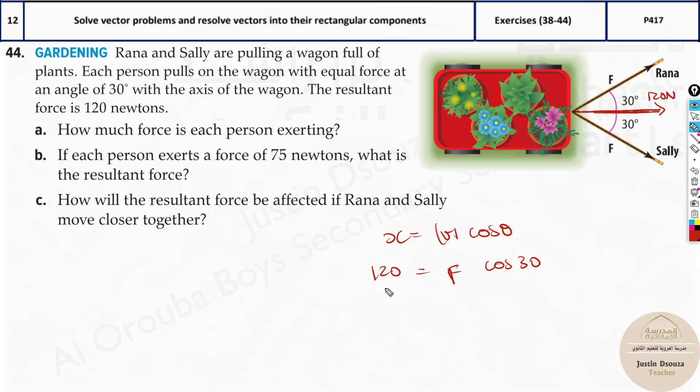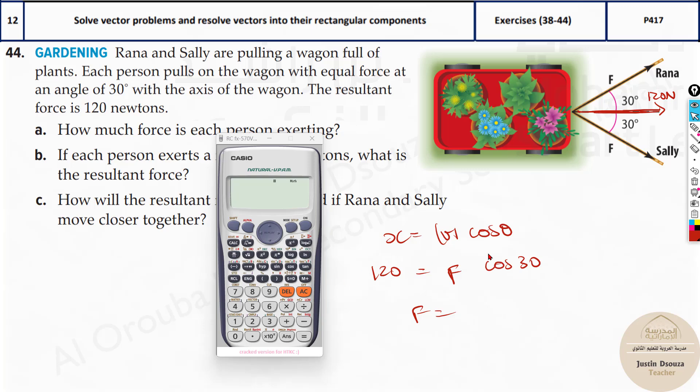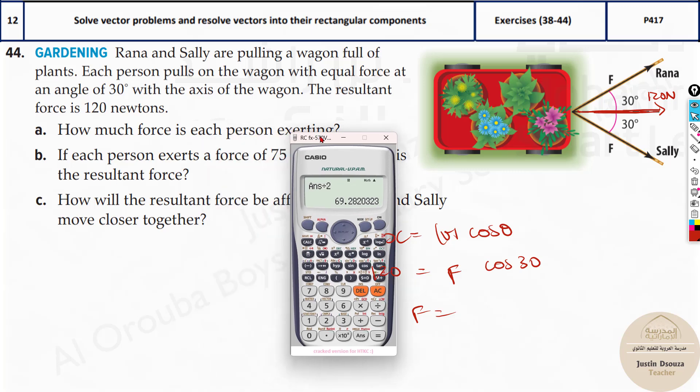And now, otherwise you can just divide this by 2 and solve it. If you solve it up in the calculator, we will get one answer for f. Let us do it. Here we need to take cosine 30 to the other side. It will be 120 divided by cosine 30 degrees. And this is the answer. It is 138.56. This answer is basically the force exerted by Rana and Sally together. But we need for single person, each person that is divided by 2, that is 69.28. So that is the answer.